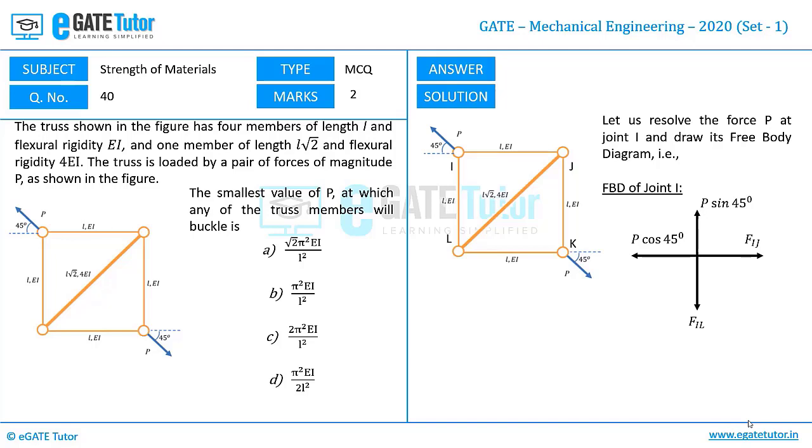In this configuration when we apply the force equilibrium, that is sum of horizontal forces equals 0 and sum of vertical forces equals 0, we get FIJ equals P/√2 and FIL equals P/√2. Basically we have found out the forces carried by members IJ and IL using the method of sections.